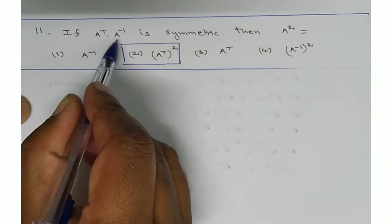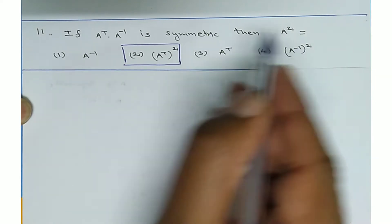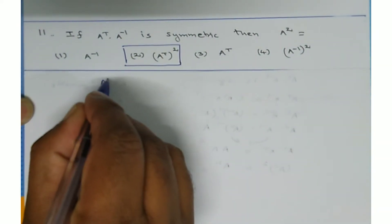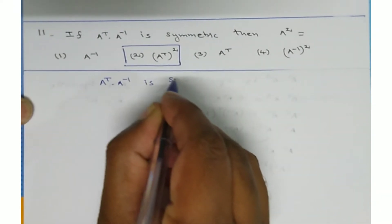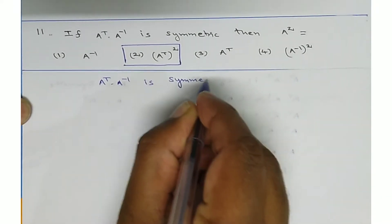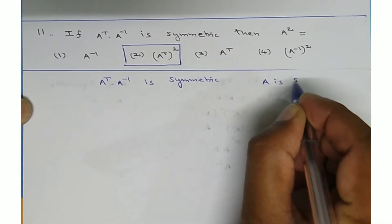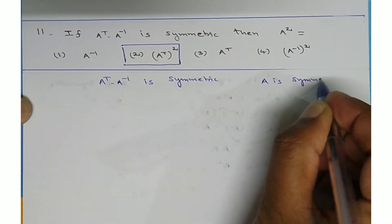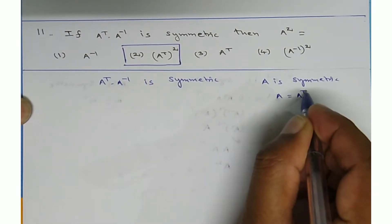If A transpose into A inverse is symmetric, then A squared is equal to what? What is given? A transpose into A inverse is symmetric. What is the condition for symmetric? If A is symmetric, then A is equal to its transpose.